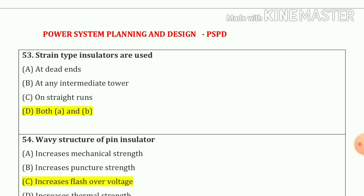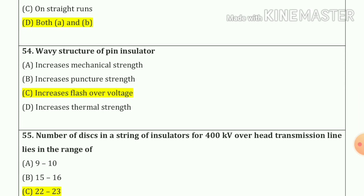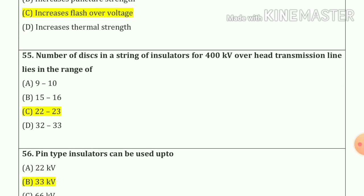Strain type insulators are used at dead ends and also at any intermediate tower — so our answer is option number D: both A and B. Question number 54: the wavy structure of a pin insulator increases flashover voltage — option number C.